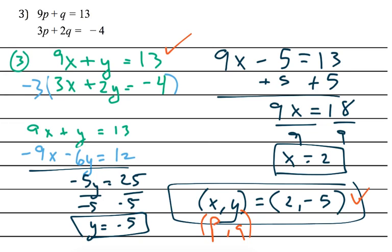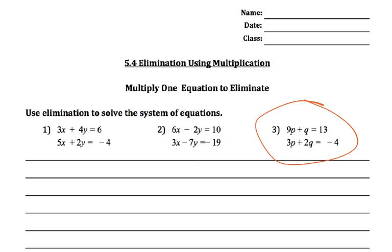We'll stop this video here since it's getting towards 10 minutes. And this is the first part where you only multiply one of the two equations to get them to eliminate one of the two variables.